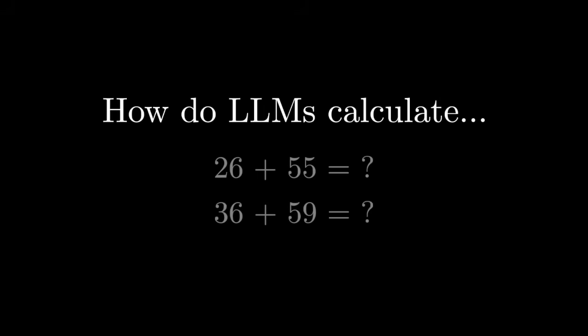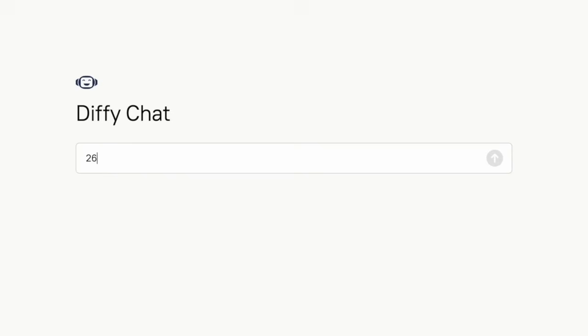How do LMs add numbers like in these equations? Let's say we ask the chatbot the answer of 26 plus 55 equals, and it quickly replies 81. But here's where it gets interesting, because these models were never explicitly programmed to do math, which means they don't know numbers the way a calculator does.